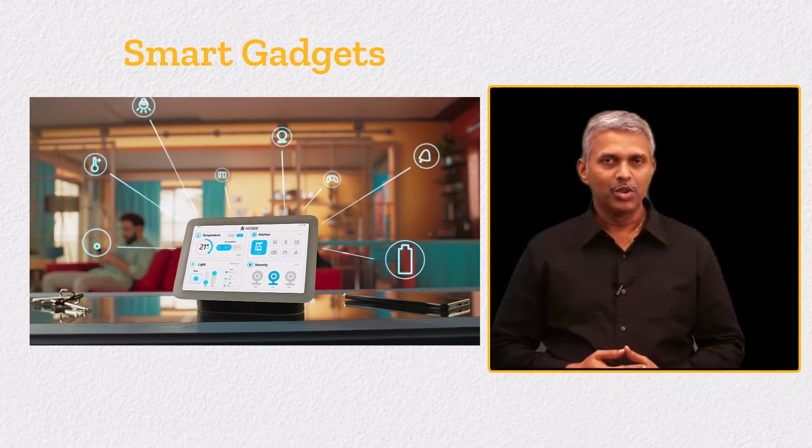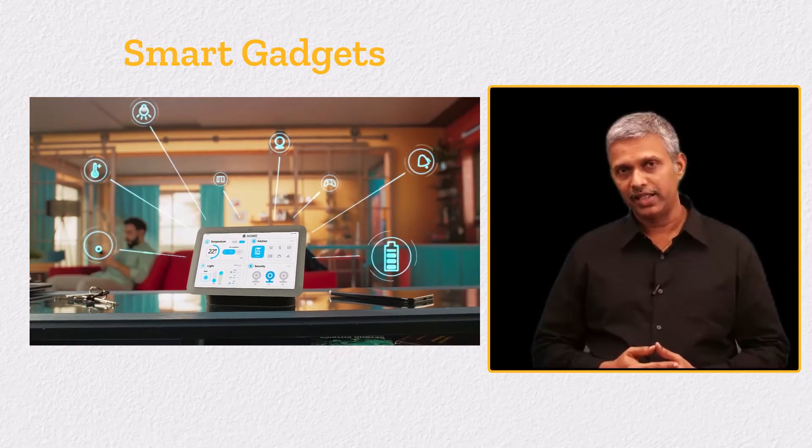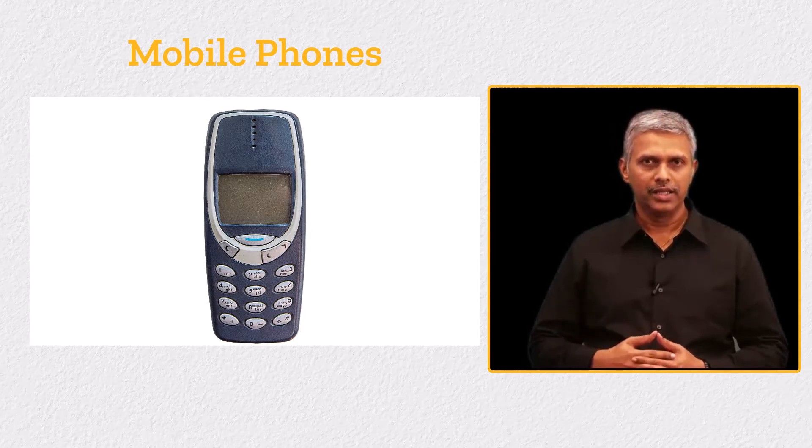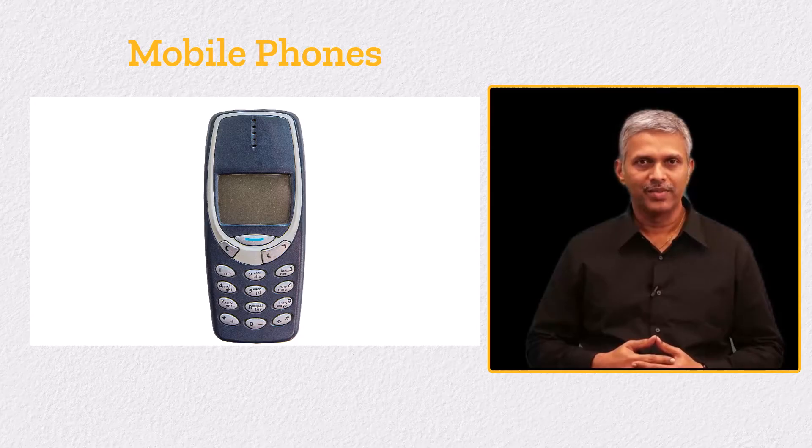If you notice, most systems and devices around us are becoming smart and intelligent. A couple of decades ago when cell phones just made it to the market, they could only support calling and maybe sending text messages. Today, a phone does so much more that we can call them smartphones.